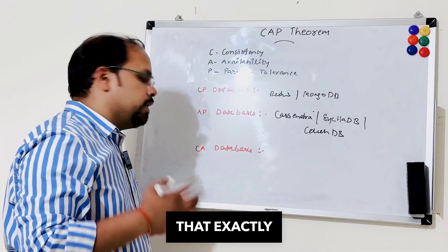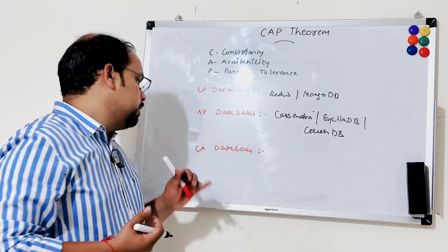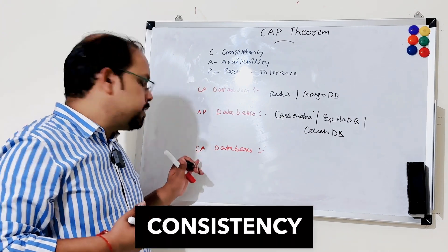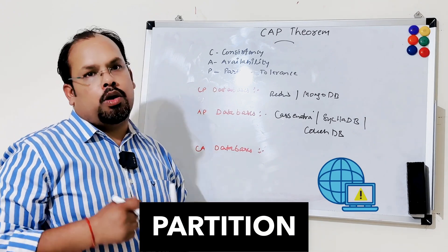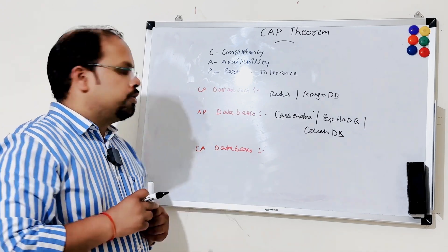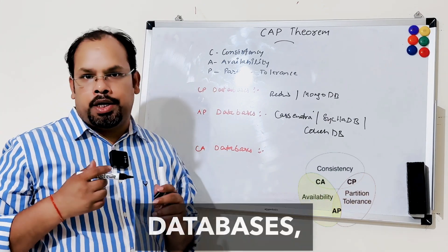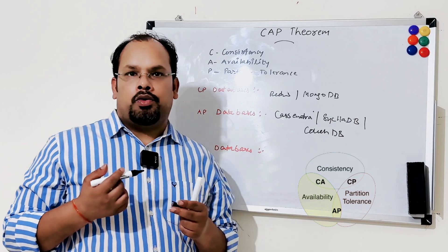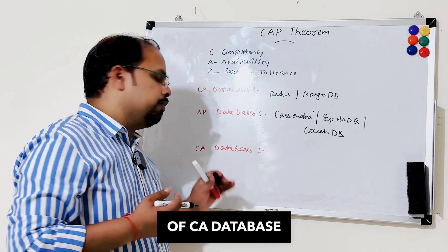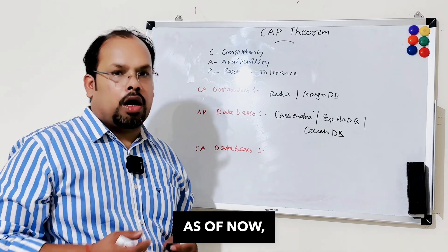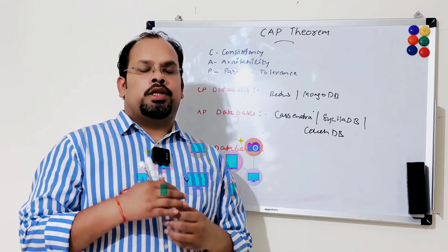The last category is CA databases. This is exactly where CAP theorem and NoSQL databases collide — we have consistency and availability, but when any partition or network failure happens, as per CAP theorem we have CA-type databases. However, in the real world we don't have CA distributed databases as of now, because for any distributed system there is no way to avoid a network partition.